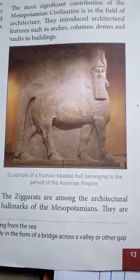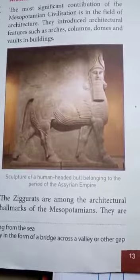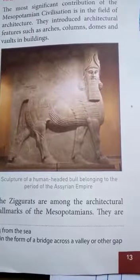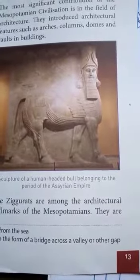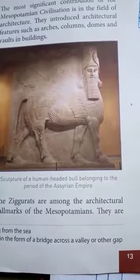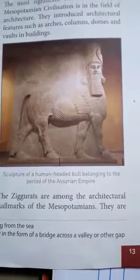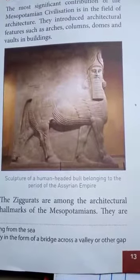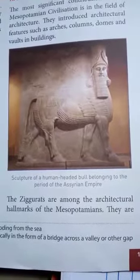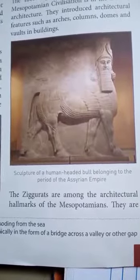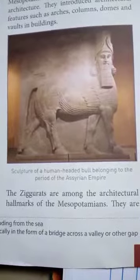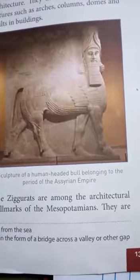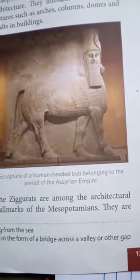A dome is anything shaped like an upturned ball, often used as a cover — similar to how a ball-shaped cover is placed over food items. A vault means anything resembling a downward-facing concave structure. So arches, columns, domes, and vaults are the architectural features used by the Mesopotamian people to construct and design their buildings.